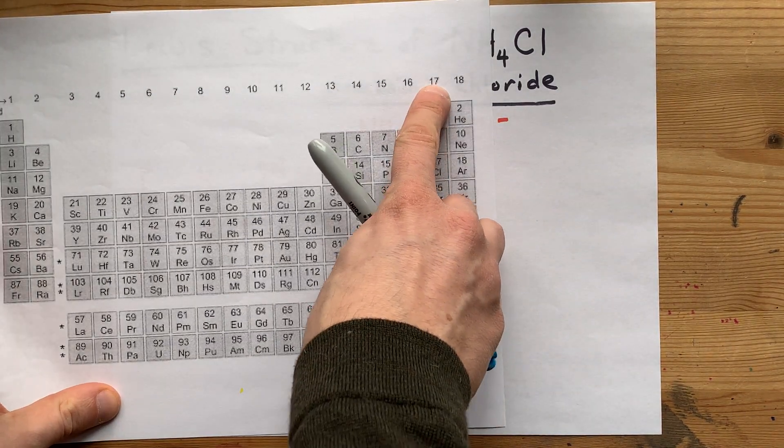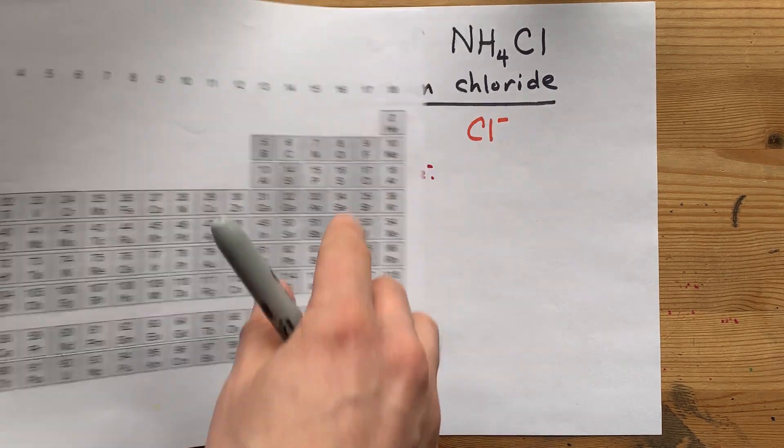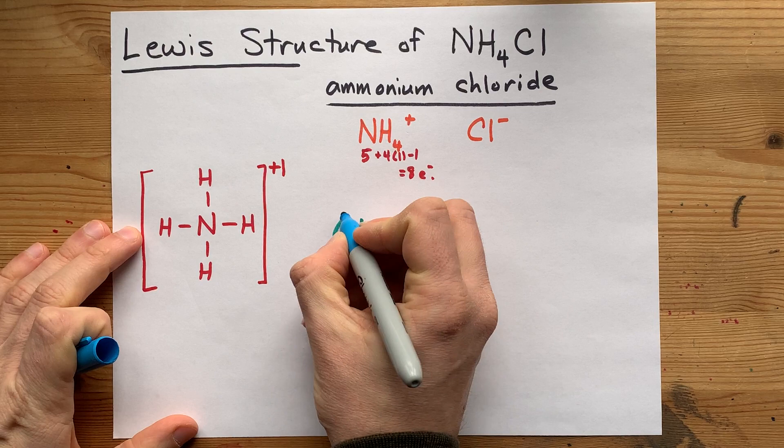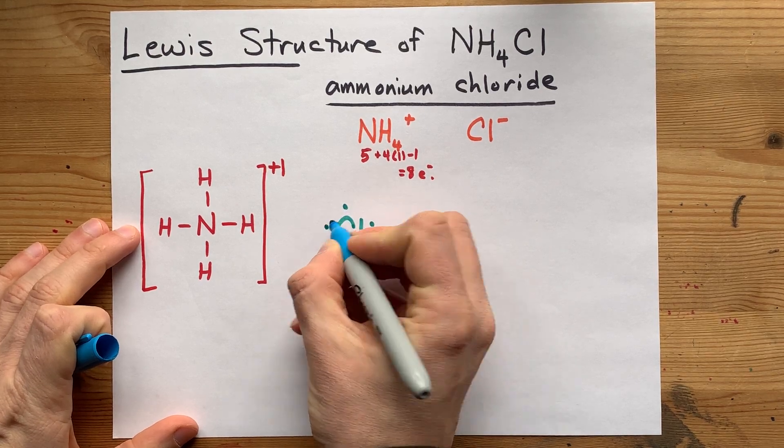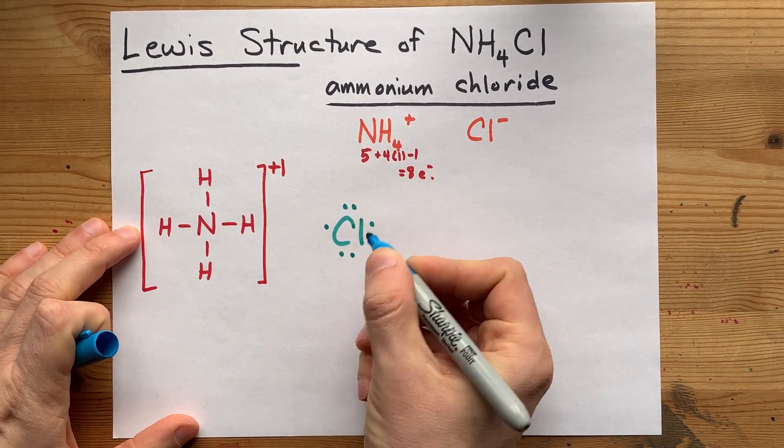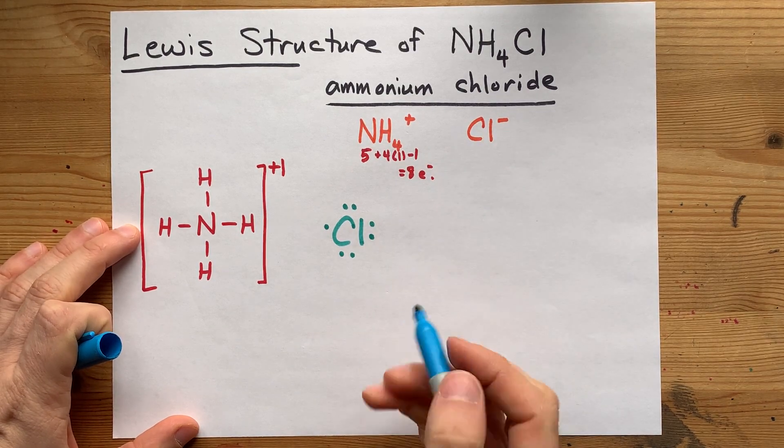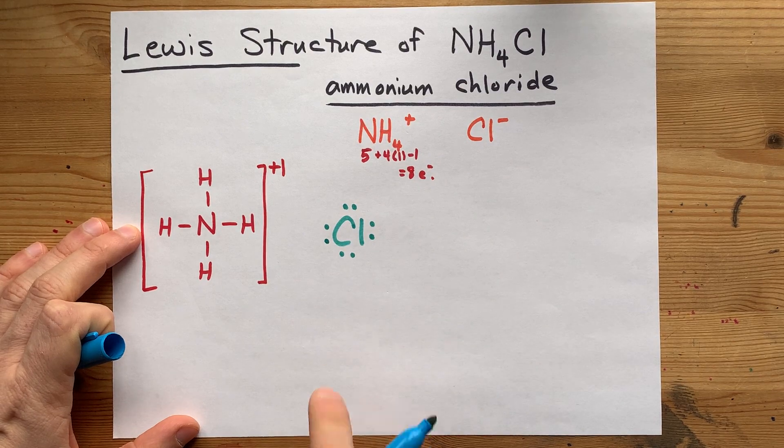Chlorine is in group 17, so it brings seven valence electrons with it. Cl one, two, three, four, five, six, seven. But the one extra electron, which gives it the minus one charge, gives it the eighth.